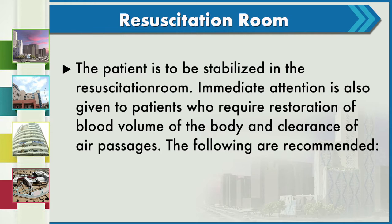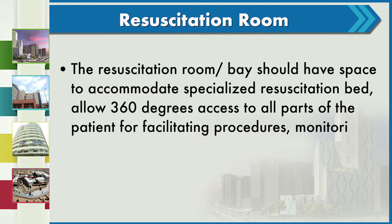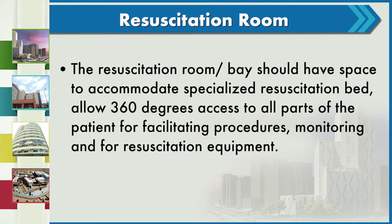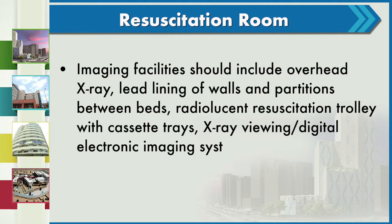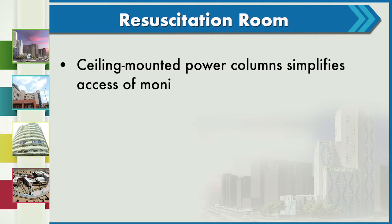The resuscitation room bay should have space to accommodate a specialized resuscitation bed allowing 360-degree access to all parts of the patient for procedures, monitoring and resuscitation equipment. Imaging facilities should include overhead X-ray, lead lining of walls and partitions between beds, radiolucent resuscitation trolleys with cassette trays, and an X-ray viewing digital electronic imaging system. A ceiling-mounted power column simplifies access to monitoring lines and devices, and an OT light should be available. All electrical power should be on emergency standby circuits.